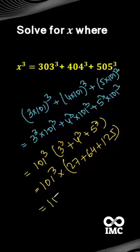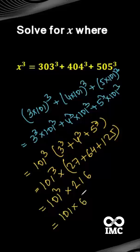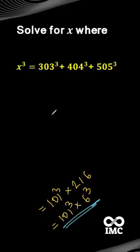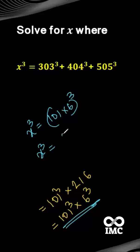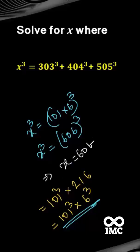Adding them gives 216, and 216 can be written as 6 cube. So we have 101 cube multiplied by 6 cube, which equals 101 multiplied by 6 whole cube, equal to 606 cube. Since this equals x cube, x must be 606, and that is the final answer.